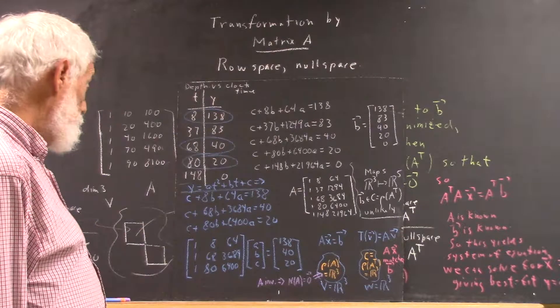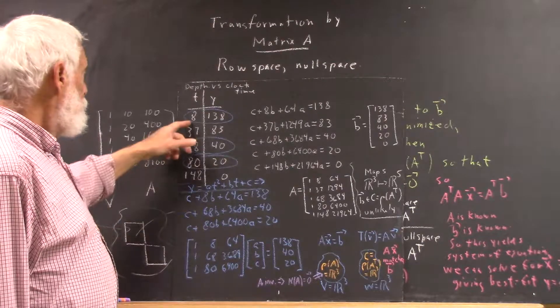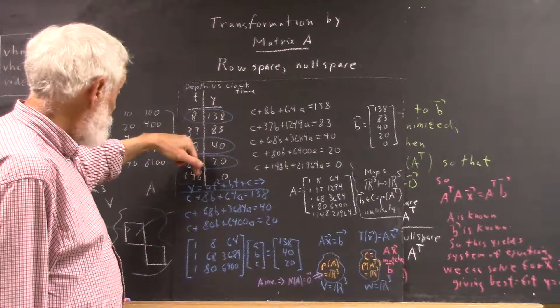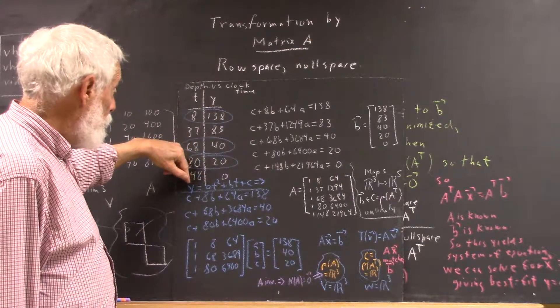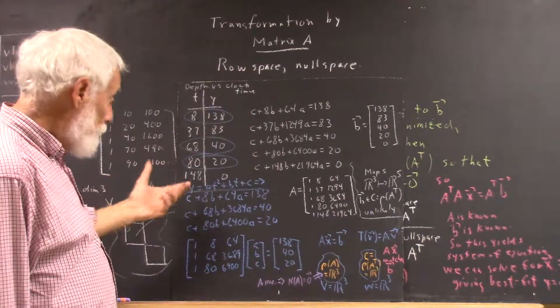And the procedure should be very familiar to everybody, very straightforward. If t equals 8 and y equals 138, our quadratic function of the form y equals at squared plus bt plus c becomes, well...